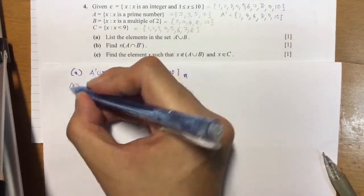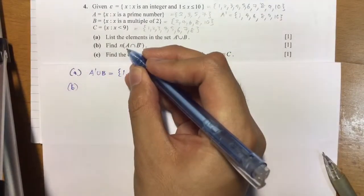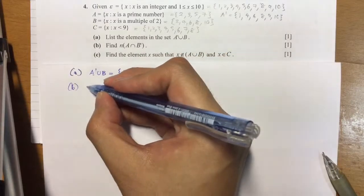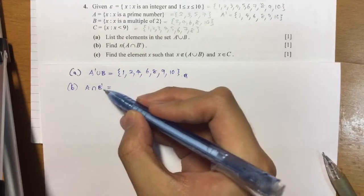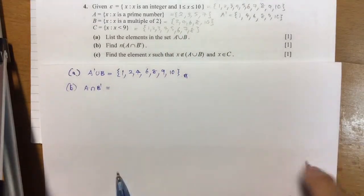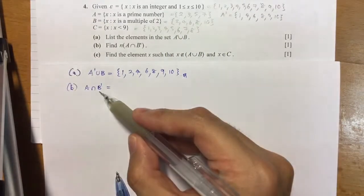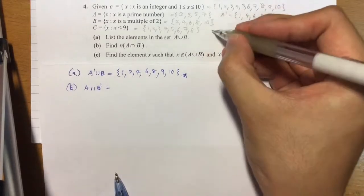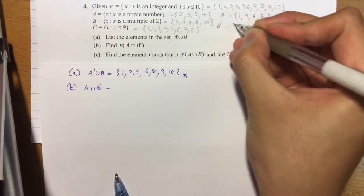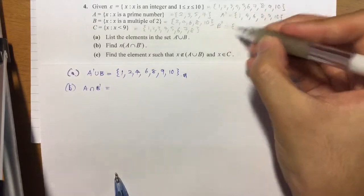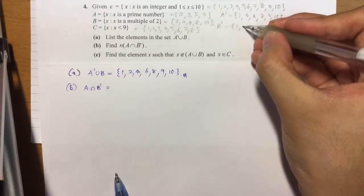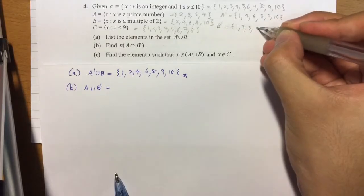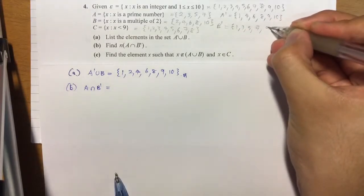Next, number of elements inside A intersect B prime. So first things first, find the set of A intersect B prime. Once again, you do not have a B complement or B prime. So list out what B complement is. 2, 4, 6, 8, 10. So everything else that's not these numbers from the universal set. We have 1, 3, 5, 7 and 9.